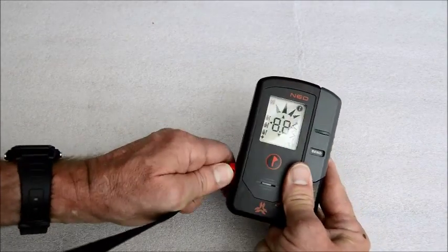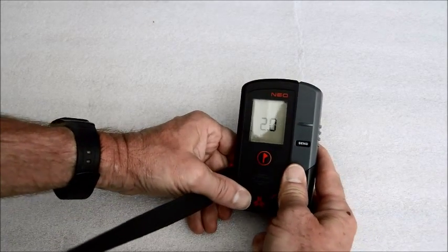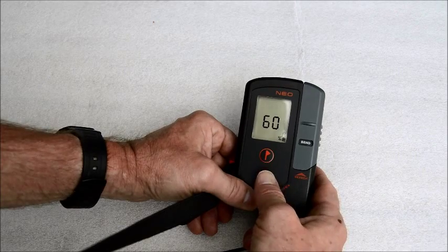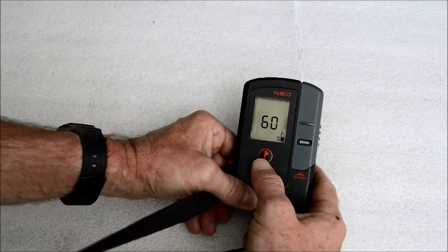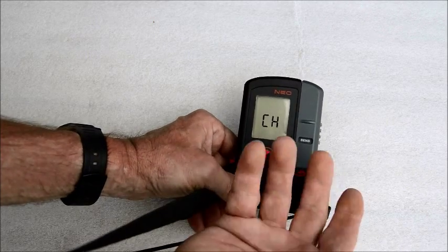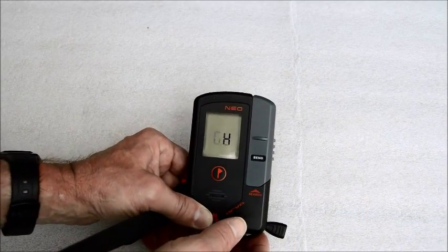Now if just after you turn the Neo on, you want to do a group check, you can do that when the CH appears. And then you press the flag button. Now it's in group check mode.